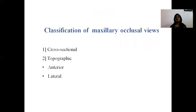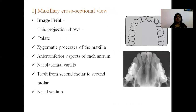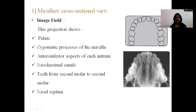The different views are: cross-sectional, topographic anterior, and lateral view. For the cross-sectional maxillary view, the image field includes the palate, zygomatic process of maxilla, antero-inferior aspect of the antrum, the nasolacrimal canal, teeth from second molar to second molar, and the nasal septum.